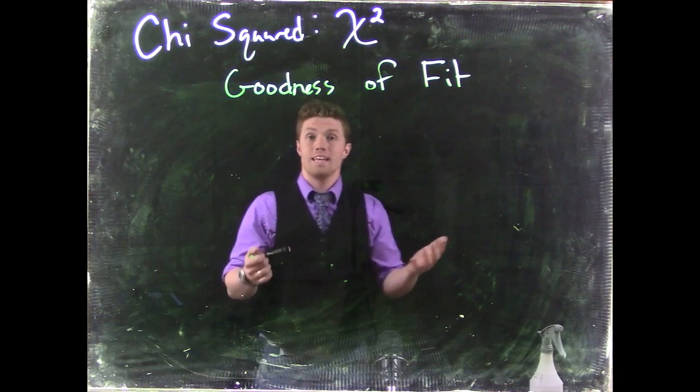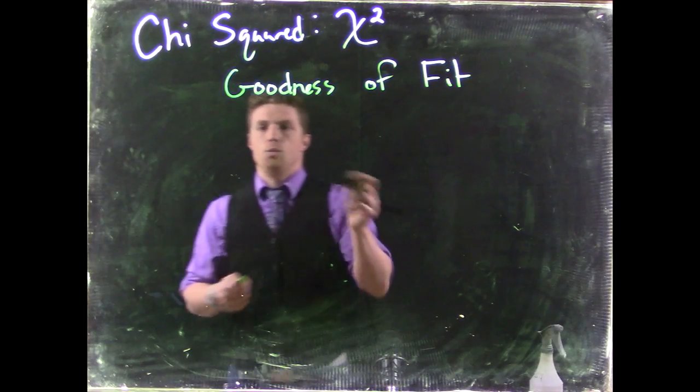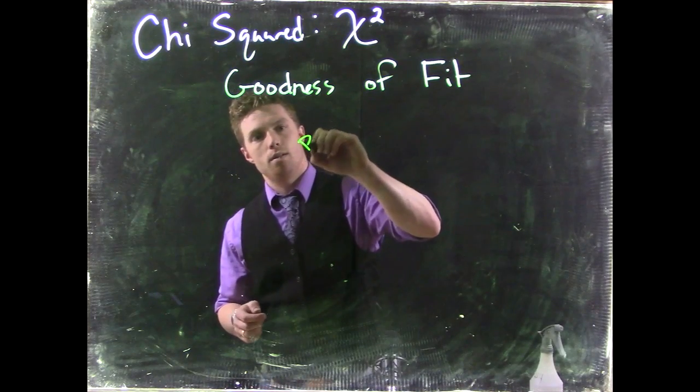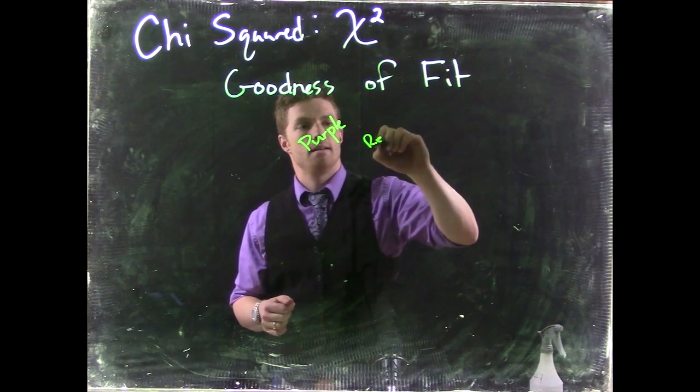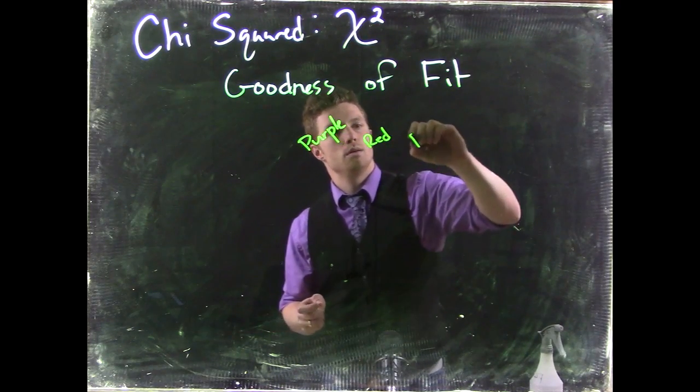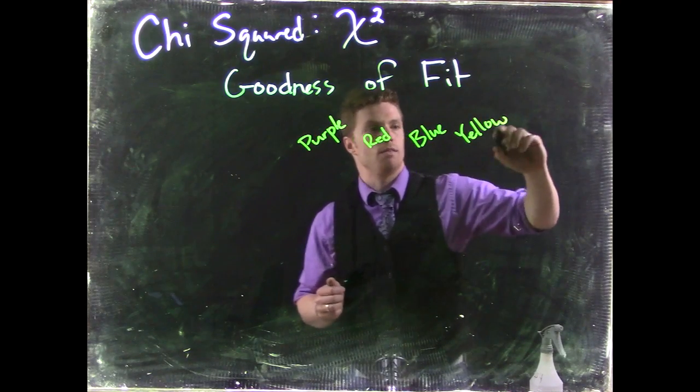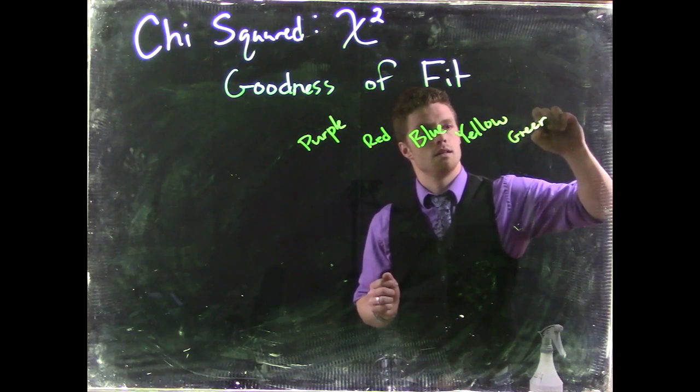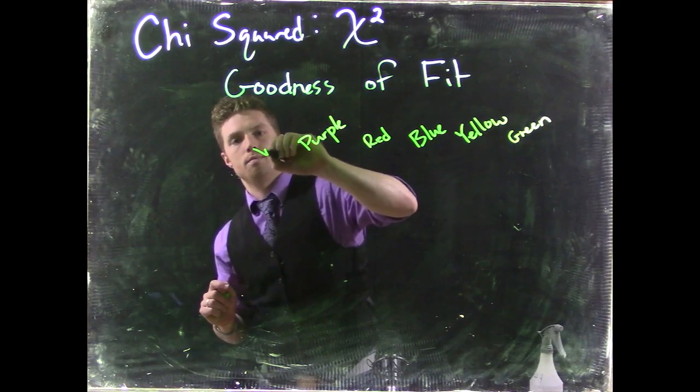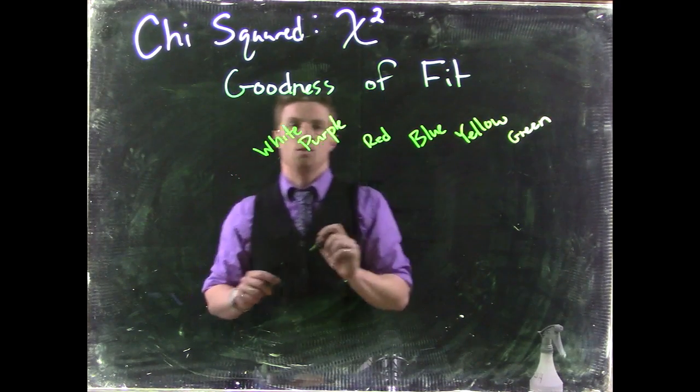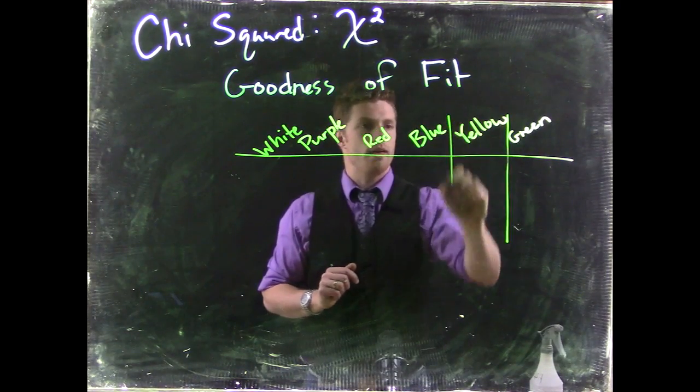let's say that we are rolling a dice and this dice has got six colors, one for each side. We'll say purple, red, blue, yellow, green, and white. So these are our six categories that we have.